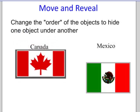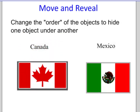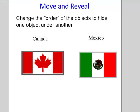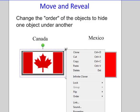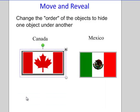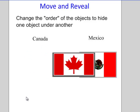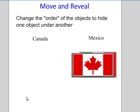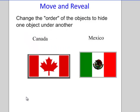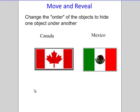Over here I have an example where the Mexican flag moves over the word Mexico, but the Canadian flag does not. I need to change the order of the objects to allow me to hide the word Canada under the flag. If I select the flag and select the menu arrow, one of my choices is order. Now I can say bring it to the front. It's going to be the topmost object. Now as I move it, it hides the word Canada. That's called a move and reveal.